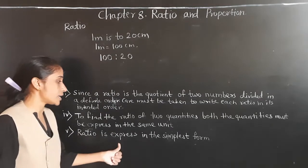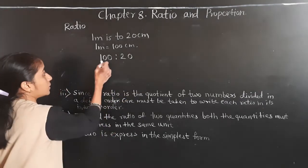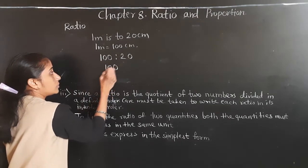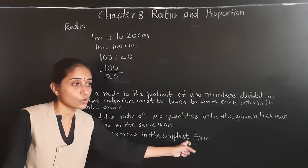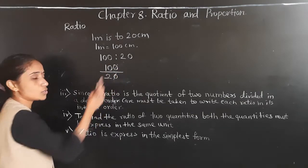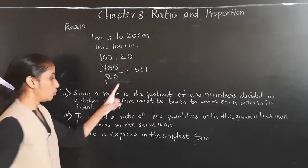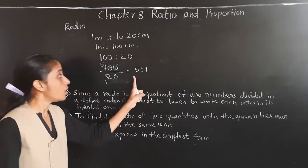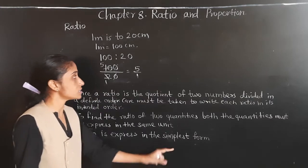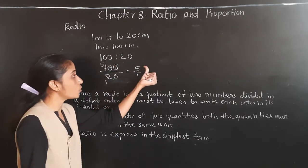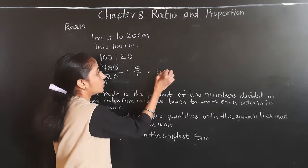The ratio should be expressed in simplest form. We write 100 upon 20 as a fraction. Cancel the zeros: upper 0 and downside 0 get cancelled, giving us 10 upon 2. Then dividing: 2 ones are 2, 2 fives are 10, so the ratio we get is 5 is to 1. The required ratio expressed in simplest form is 5 is to 1.